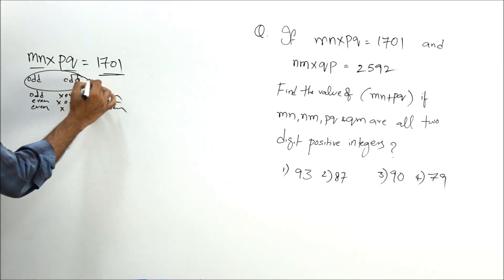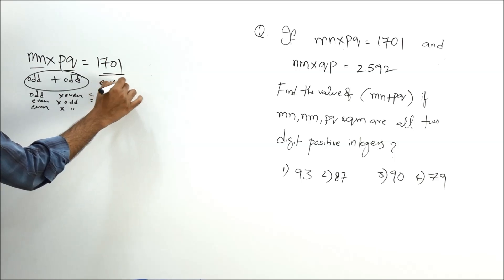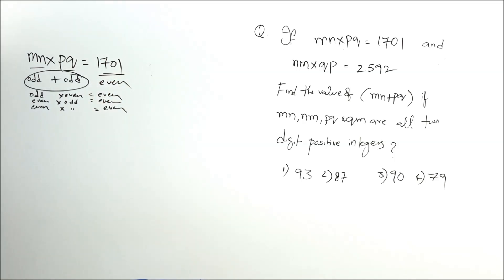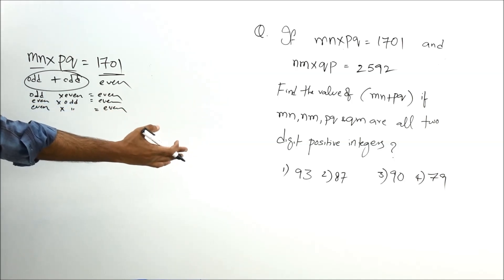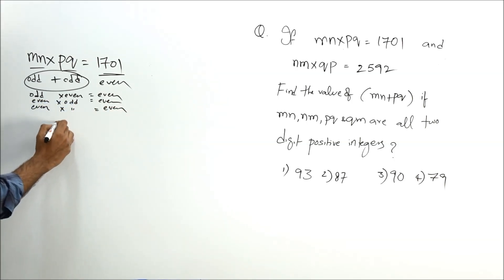When I add two odd numbers, the resultant has to be even. Let me repeat: when I add two odd numbers, the resultant should be even. When I add MN + PQ, the resultant should be even. So simply I can say the answer is 90 because remaining all numbers are odd numbers.